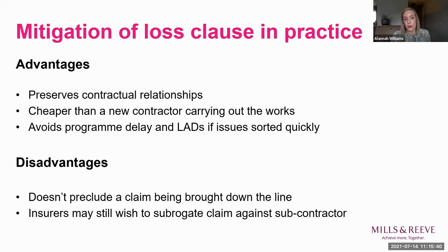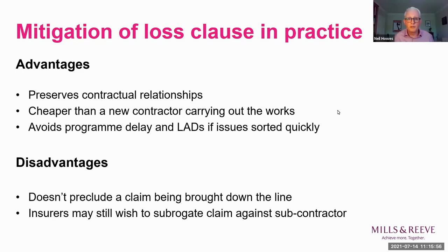There are some potential disadvantages. Doing mitigation works does not preclude a claim being brought against the insured down the line. Insurers may also still wish to bring a subrogated claim against a subcontractor if considered to have been responsible for the issue or defect. Before insurers provide cover under this type of clause, they need to be satisfied that the insured has a liability, that the remedial works are going to work, and that the insured is entitled to an indemnity.